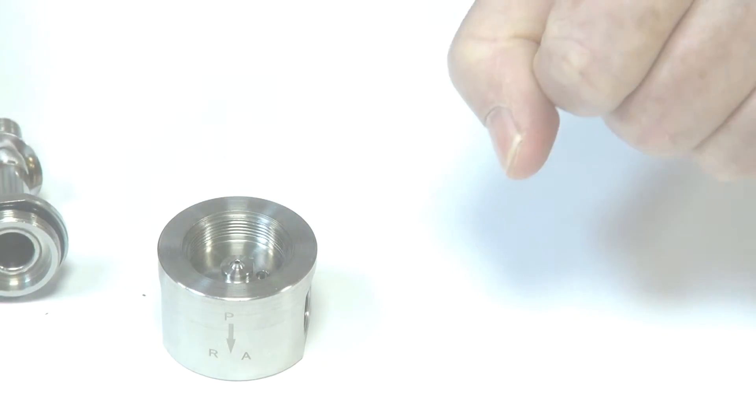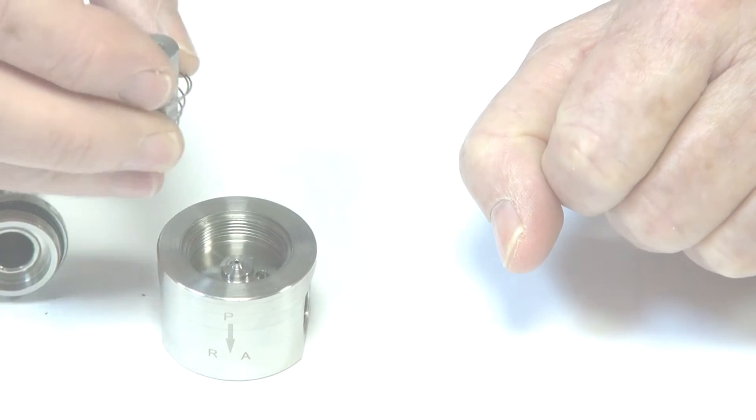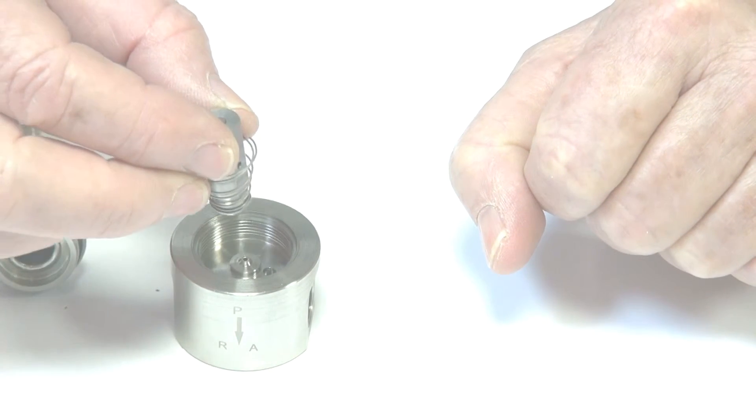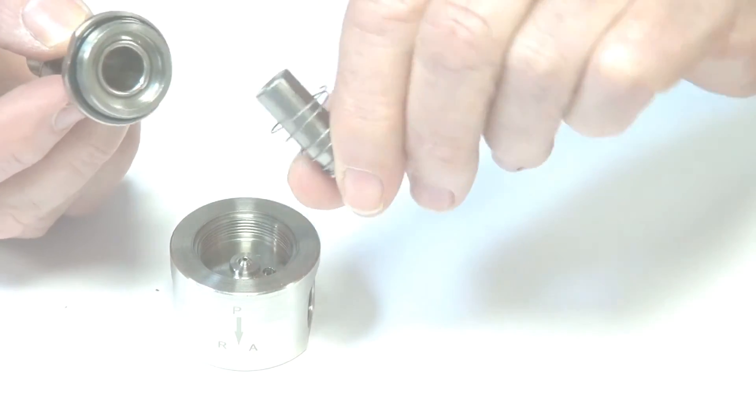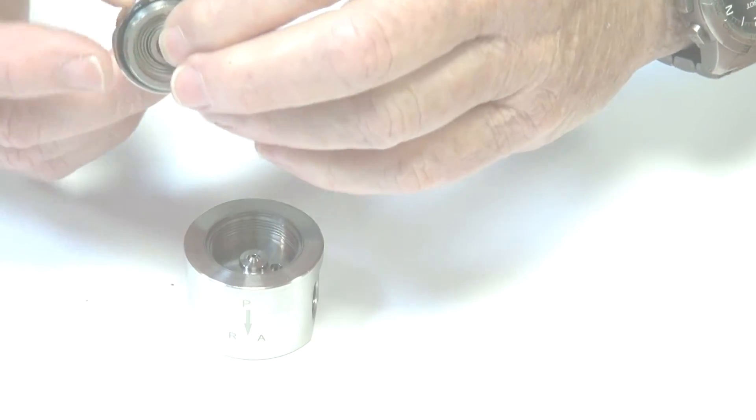When the armature is energized, it lifts off and blocks. It goes right up into that top stem here and blocks the signal off.